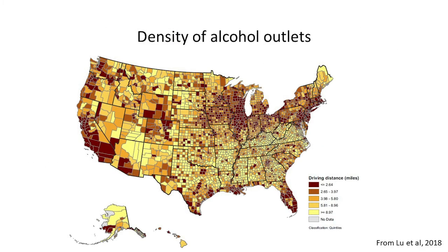This is a map of the United States showing the density of alcohol outlets in each county. The environmental context I'm focusing on is the density of alcohol outlets, looking at a more fine-grained level — at the neighborhood level. This gives you an idea of the variation in the United States in outlet density across different counties. Darker counties have a greater density of outlets; lighter ones have lower density.